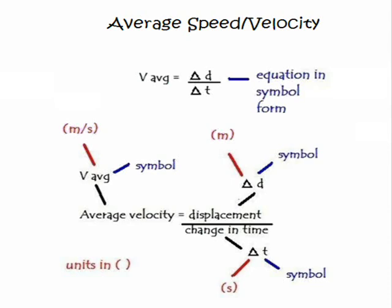Here's a breakdown of average speed and velocity. The average velocity is your displacement divided by your time — and that's also used for speed, as you'll understand when we go over the terminology. The average velocity can be calculated by taking the change — that's what the triangle means — in your distance or displacement divided by your time. First, you need to make sure you understand the symbols or variables that go with each quantity.